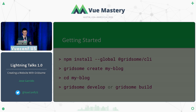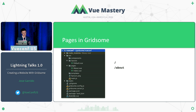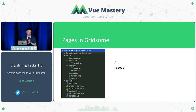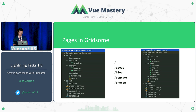Routing is very easy. Under the pages folder, anything that's a Vue component there, Gridsome is going to map to a route in your application. So Index.vue by default is going to be your home page at slash, and About.vue is going to be at slash about. If you wanted to create three new pages, you create three Vue components in the pages folder, and Gridsome maps them to slash blog, slash contact, and slash photos, for example.